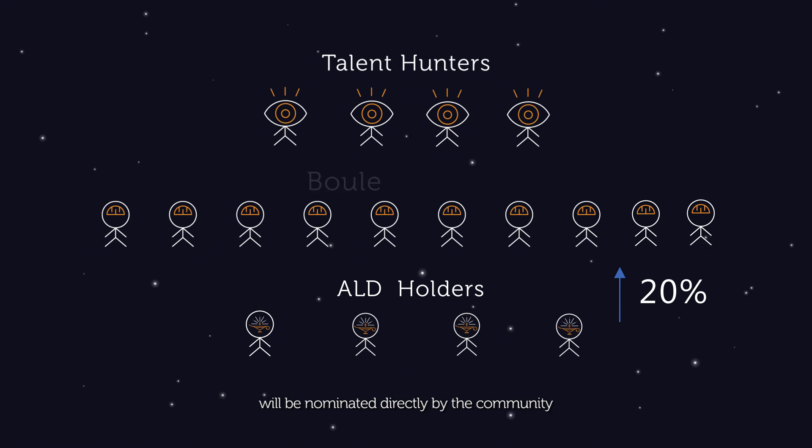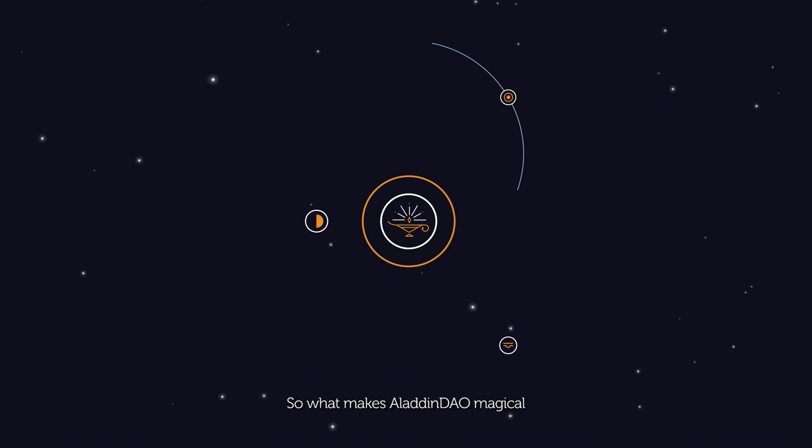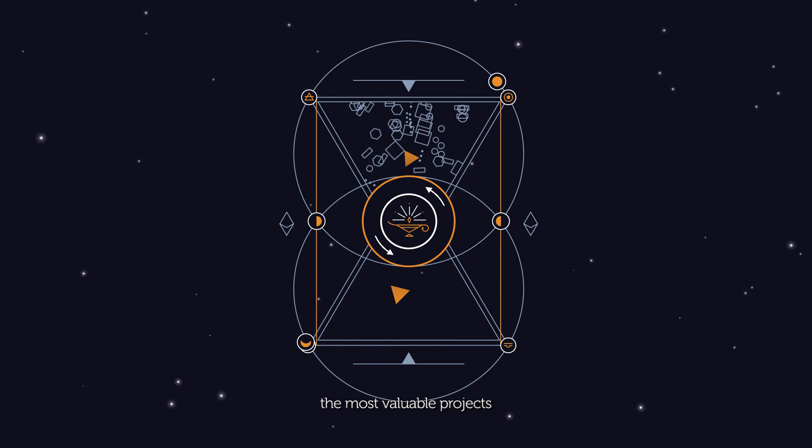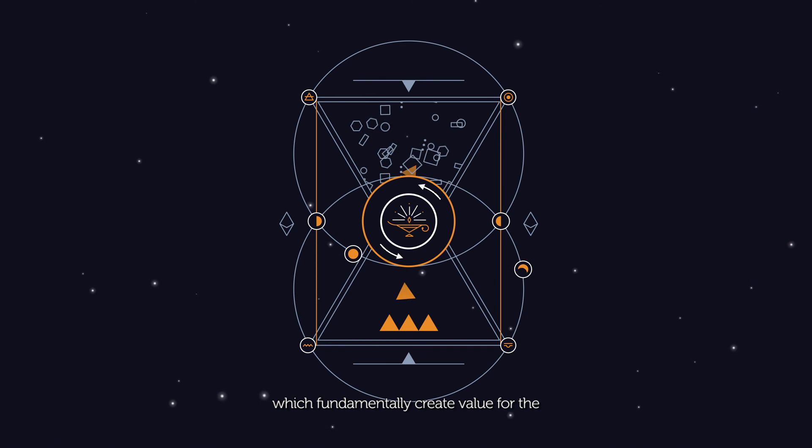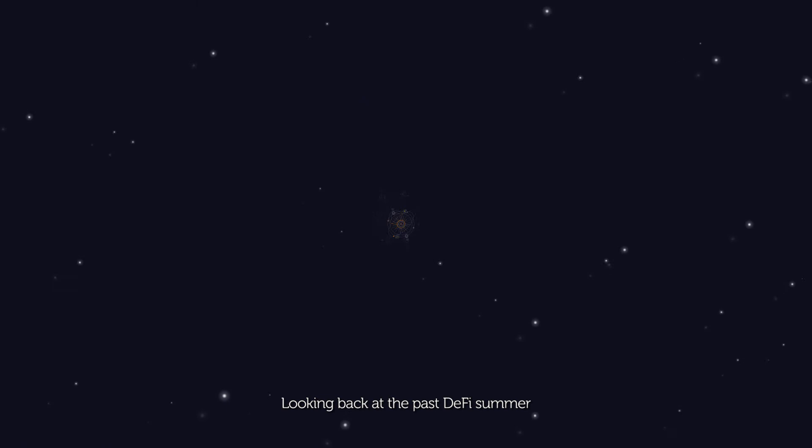So what makes Aladdin DAO magical? Our three-sided marketplace helps the community find and farm the most valuable projects. There is a tremendous amount of value in holding tokens of the projects which fundamentally create value for the community and exhibit great growth potential. Looking back at the past DeFi summer, for the most valuable projects, farming and holding quickly outperforms farming and dumping. How to know which farms are worth holding? This is the problem Aladdin BOOL solves.